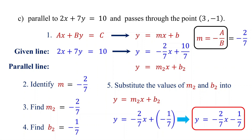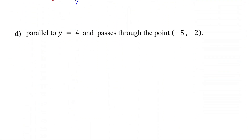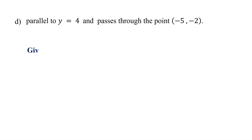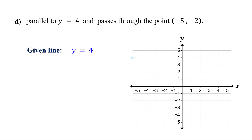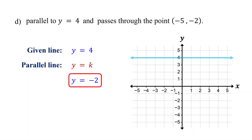To learn how to write the equation of a line that is perpendicular to a given line and passes through a given point, check the link in the description. But first, let's work on cases where the given line is horizontal or vertical. In this example, the given line is y equals 4, which represents a horizontal line crossing the y-axis at 4. A line parallel to this line must also be horizontal, written as y equals k, where k is the y-coordinate of the given point. Here, the y-coordinate of the given point is negative 2, so k is negative 2. Therefore, the equation of the parallel line is y equals negative 2.